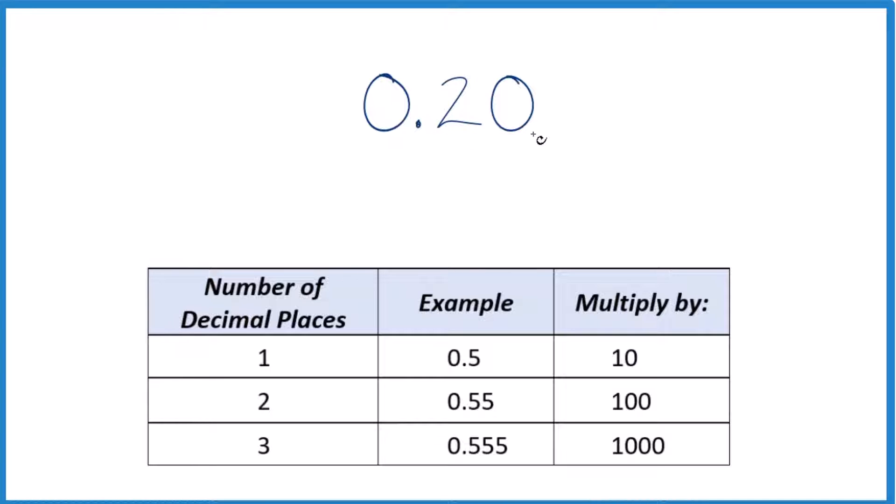So 0.20, that's the same as just having 0.2. It's the same value. This might be a little bit easier to work with here.